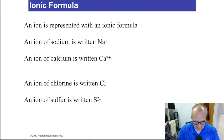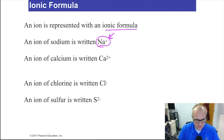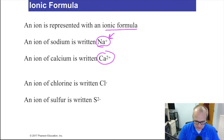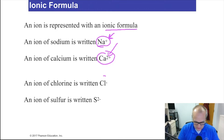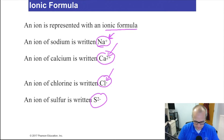An ion is represented with an ionic formula. For example, sodium is written with a plus charge superscripted to the right — that is the sodium ion. The sodium atom would not have the plus charge. Calcium has a 2+ charge written there — that's the calcium ion. To write negative charges for anions, simply write the charge superscripted to the right, such as negative 2.